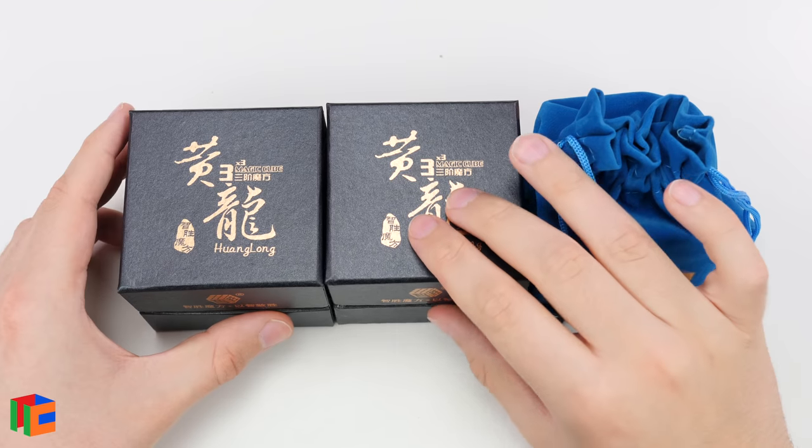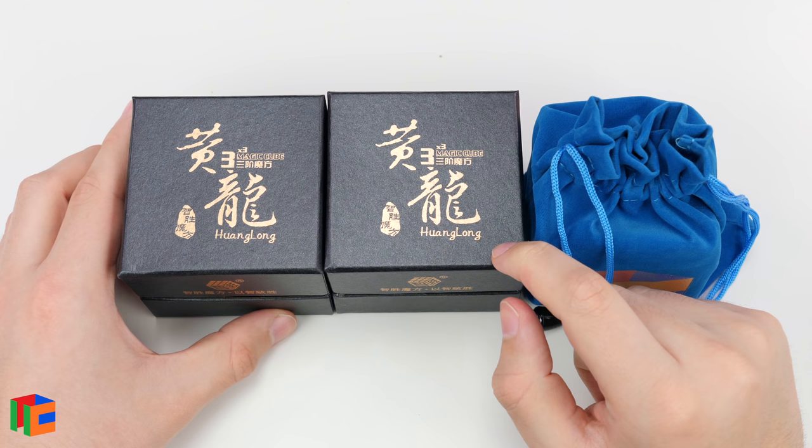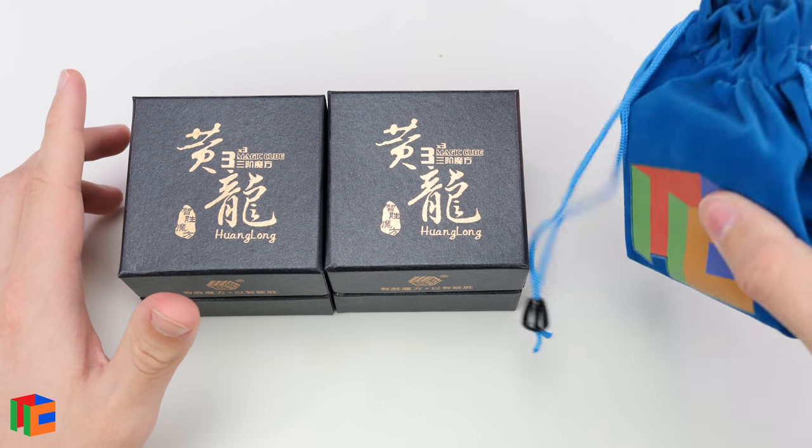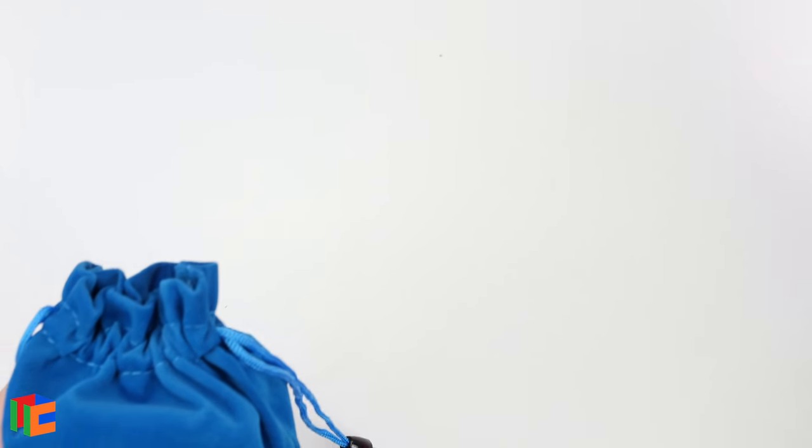Alright, so it looks like we have three puzzles in here. These two look like the new Yuxin Huanglong 3x3s. I'm assuming one of them is magnetic and one is non-magnetic. And then we have another puzzle, so I'm actually going to go over this one first and then we'll save the Huanglongs for later.